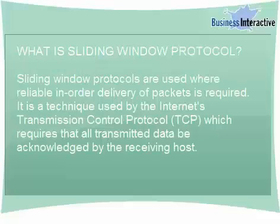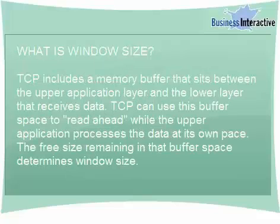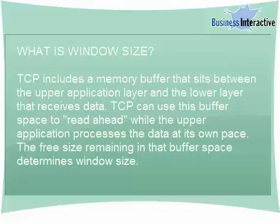Second, sliding window protocol. TCP includes a memory buffer that sits between the upper application layer — for example, HTTP protocol or FTP protocol — and the lower layer that receives data. The buffer allows TCP to receive and process data independently of the upper application. In other words, TCP can use this buffer space to read ahead while the upper application processes the data.